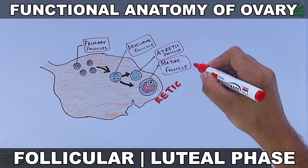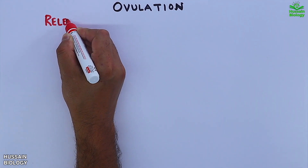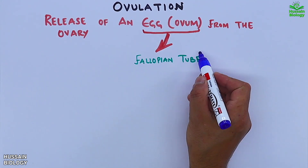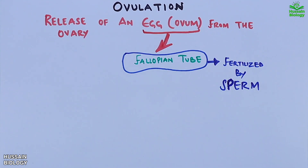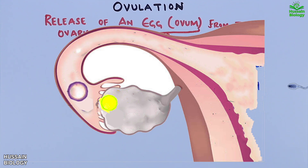In the previous video we discussed the functional anatomy of the ovary; the link is in the description. In this video we'll be discussing ovulation. Simply, it's the release of a mature egg or ovum from the ovary into the fallopian tube, which is then fertilized by the sperm. In this animation we can see the ovary releases the egg into the fallopian tube, where the sperm comes in and fertilizes it. Now let's get to the detailed mechanism of ovulation.